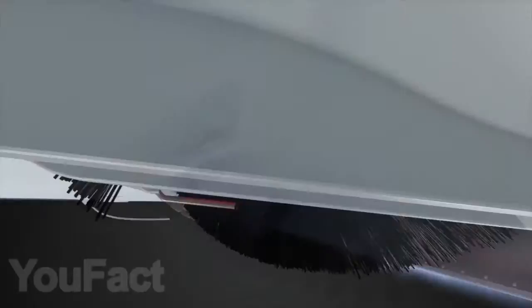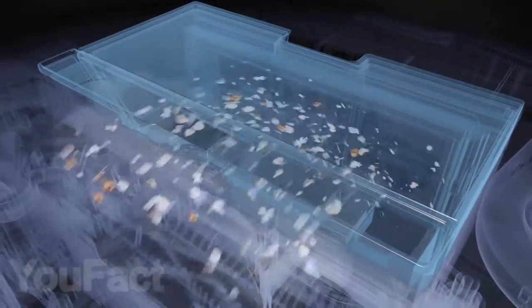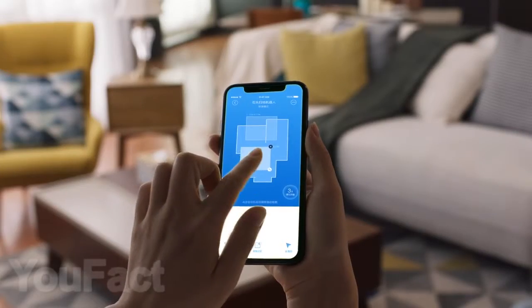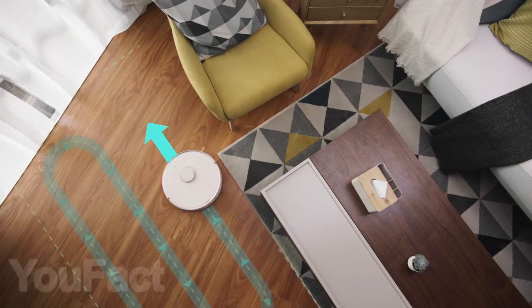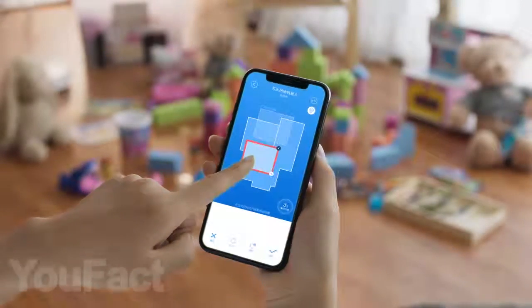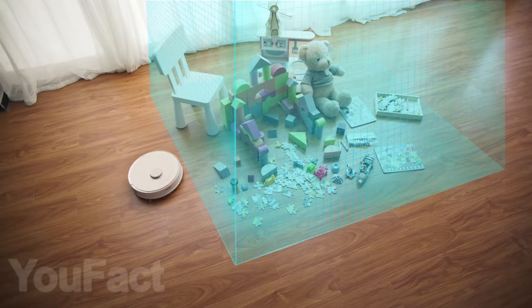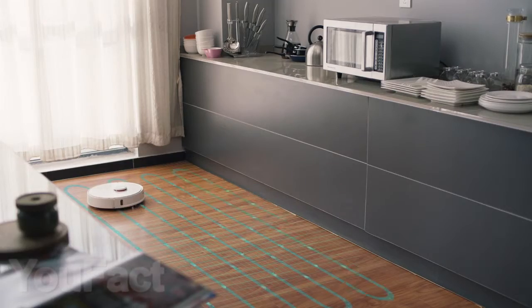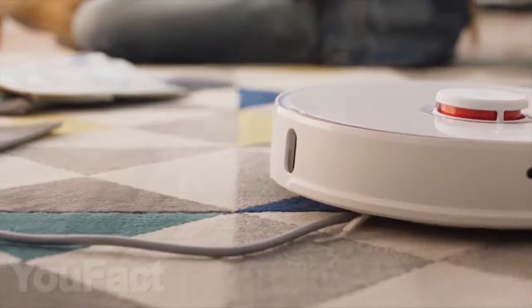Having reached the carpet, the vacuum cleaner automatically turns on the maximum suction level so as to not miss a single speck of dust. Using the My Home app, you can plan a cleaning, for example, once a week, and the robot will automatically clean only the necessary rooms without your participation. Thanks to the volumetric battery, the vacuum cleaner can work up to two and a half hours, which is ideal for a large house.